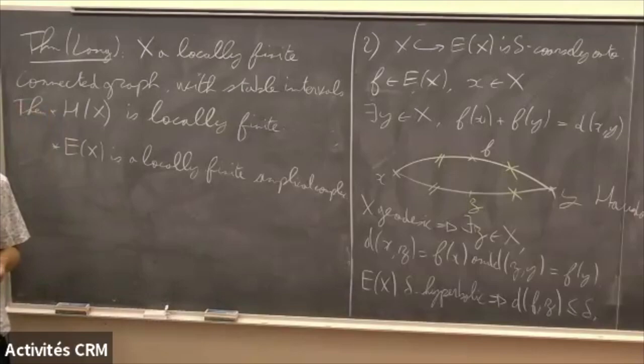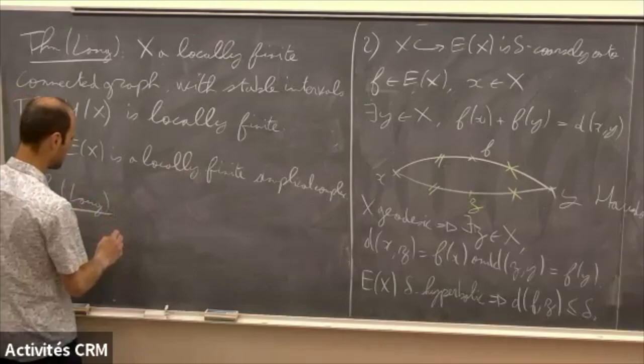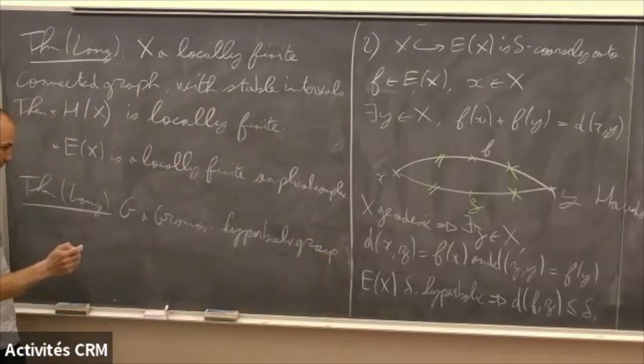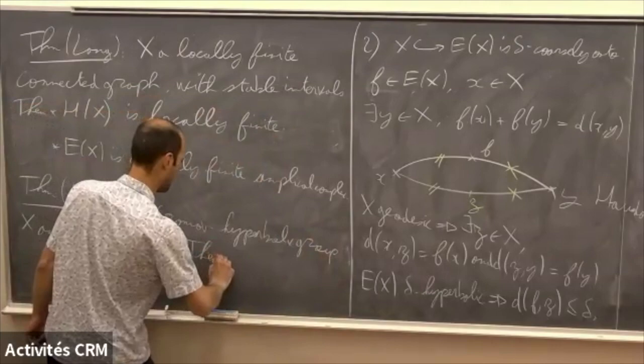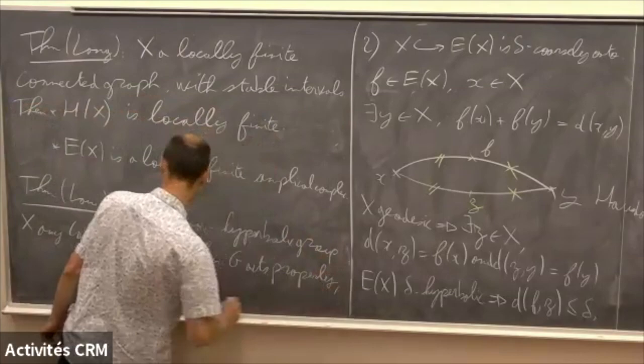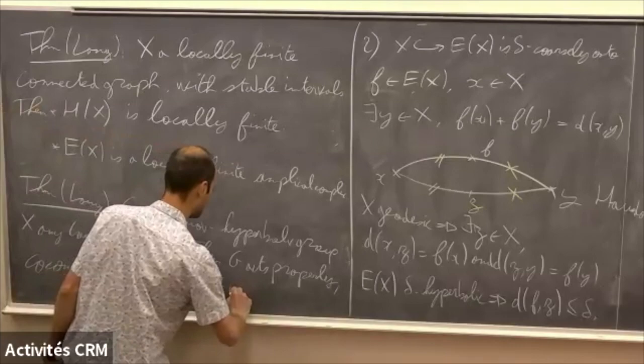Now that we have everything, we can conclude with the following result of Lang: if G is a hyperbolic group and X is any Cayley graph of G, then G acts properly and co-compactly on the heli hull of X. In particular, G is heli. How can we see that? Since X is hyperbolic, we know that the heli hull of X — which is contained in the injective hull of X — is at bounded distance from X. This is the coarse injectivity property.